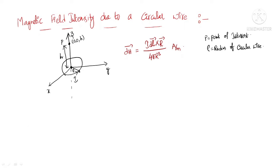Let us consider a small circular element. I need to join this element with the point of interest. The vector r bar is always drawn from the current element to the point of interest. For a circular or cylindrical system, when moving along the circle from one point to another, there is only variation in phi — no variation in rho or z.